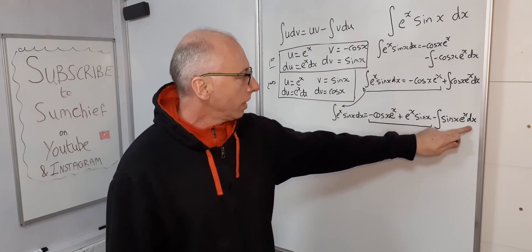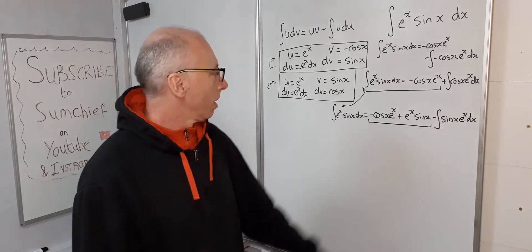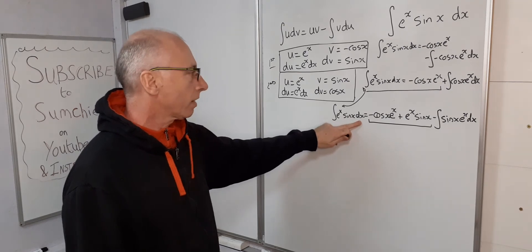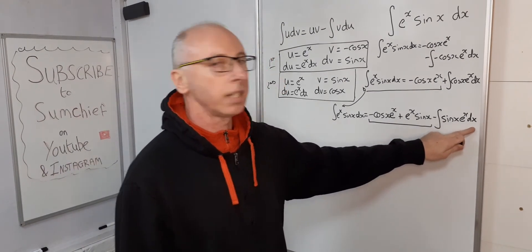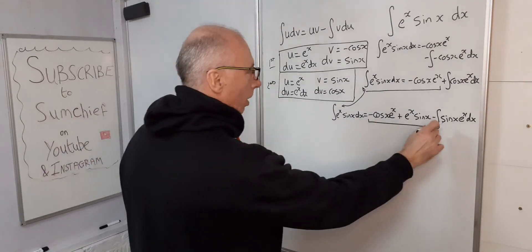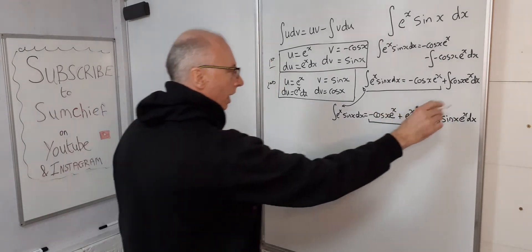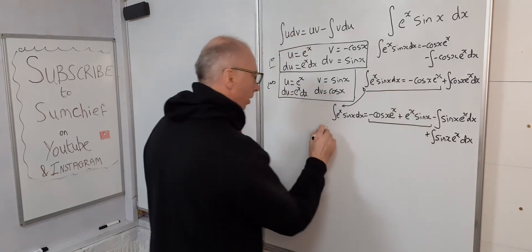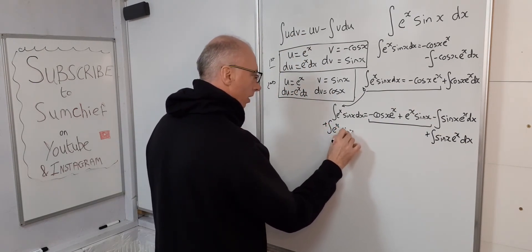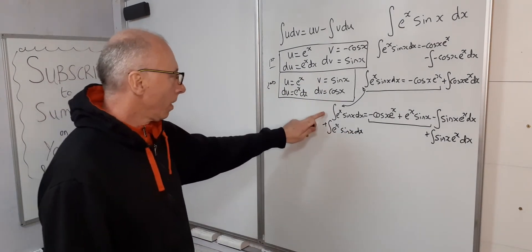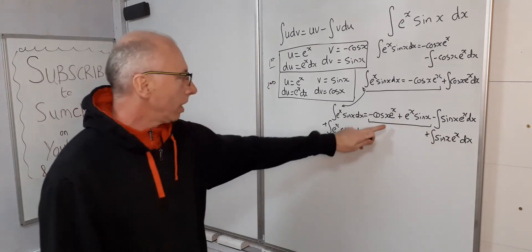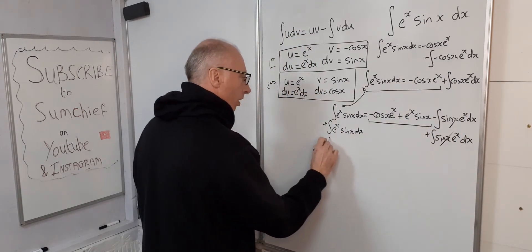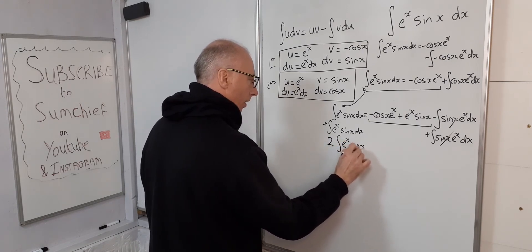Now there's a way around needing a third integration by parts. Look closely: on the left we have the integral of e^x sine(x) dx, and on the right we have a minus integral of e^x sine(x) dx. If we add the integral of e^x sine(x) dx to both sides, the right-hand side cancels out and we're left with 2 times the integral of e^x sine(x) dx on the left.